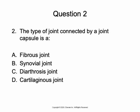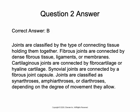Now a question to test our knowledge: the type of joint connected by a joint capsule is — A) a fibrous joint, B) a synovial joint, C) a diarthrosis joint, or D) a cartilaginous joint. If you picked B, you're correct. Joints are classified by the type of connecting tissue holding them together: fibrous joints by fibrous tissue, ligaments, and membranes; cartilaginous joints by fibrocartilage or hyaline cartilage; and synovial joints by a fibrous joint capsule with synovial fluid. Note that the terms synarthrosis, amphiarthrosis, and diarthrosis relate to the degree of movement, not composition.